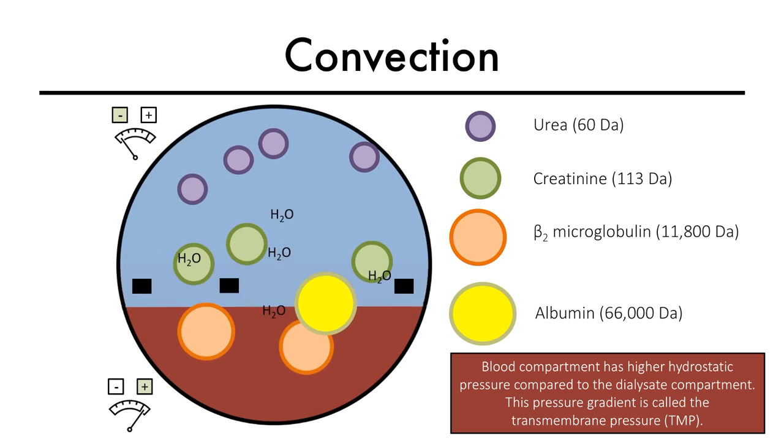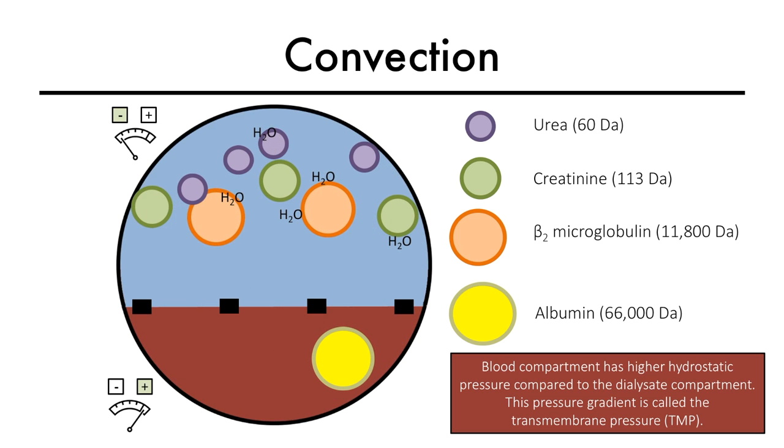Albumin is a large molecule with a molecular weight of 66,000 Daltons, and has low diffusive and convective clearance across a standard dialysis membrane.